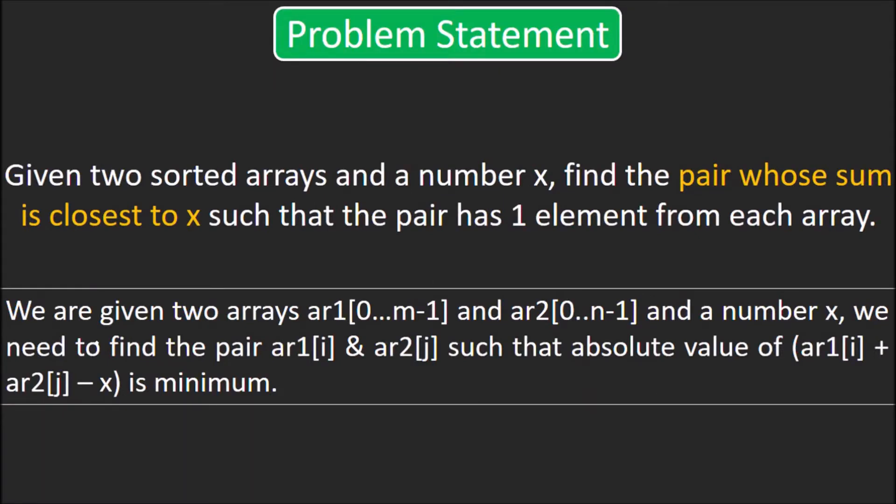The problem statement says that given two sorted arrays and a number x, find the pair whose sum is closest to x such that the pair has one element from each array. In other words, we are given two arrays ar1 and ar2 and a number x. We need to find the pair ar1[i] and ar2[j] such that the absolute value of ar1[i] plus ar2[j] minus x is minimum.